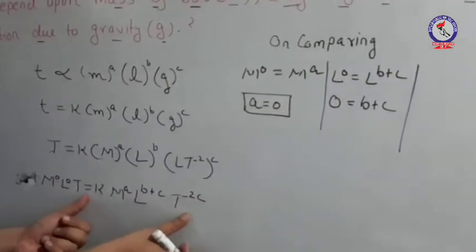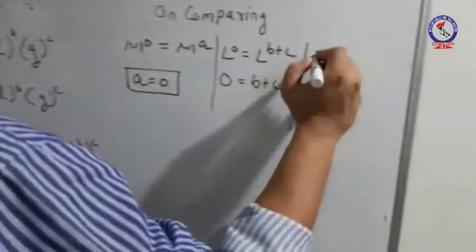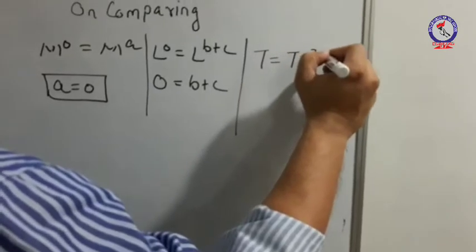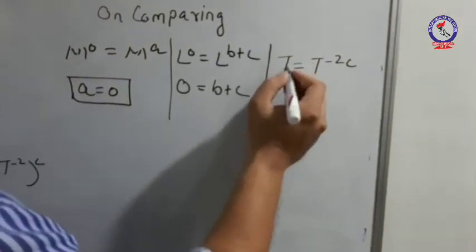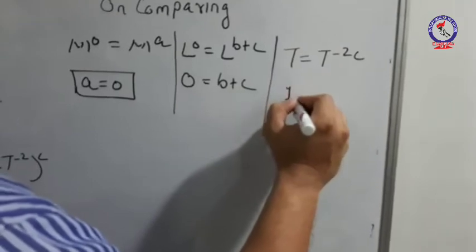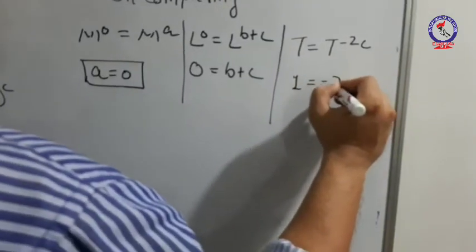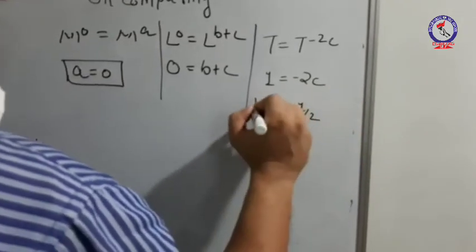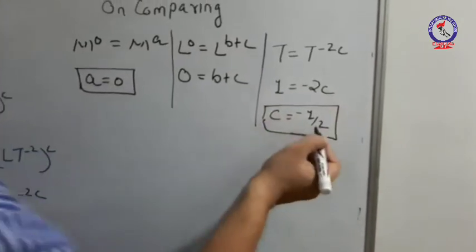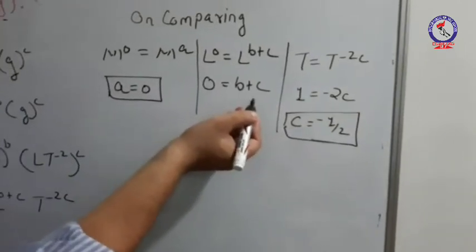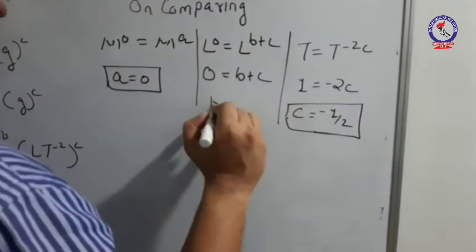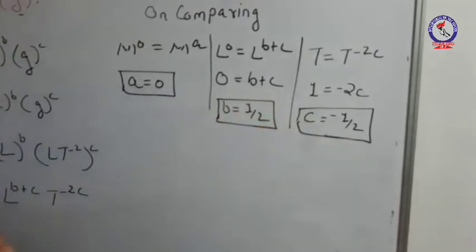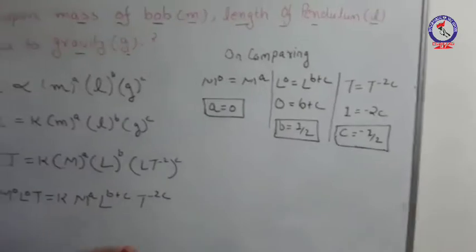For time: T to the power 1 on the LHS equals T to the power minus 2C on the RHS. So 1 equals minus 2C, which gives C equals minus 1 by 2. Substituting C equals minus 1/2 into the equation B plus C equals 0, we get B equals 1 by 2.